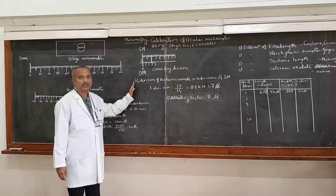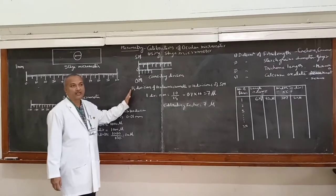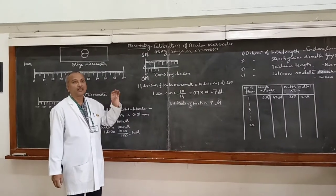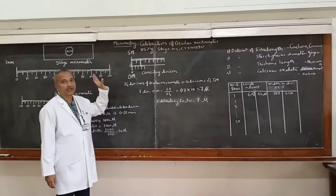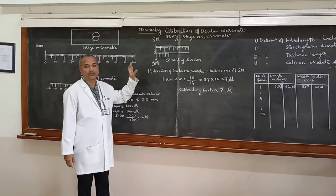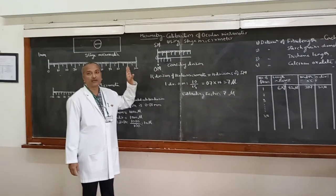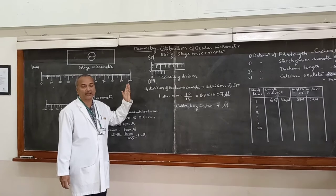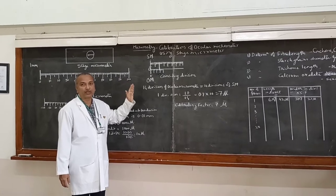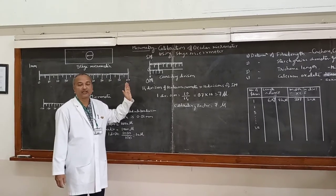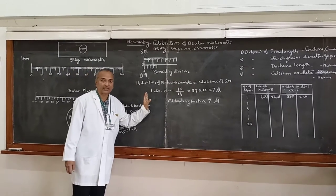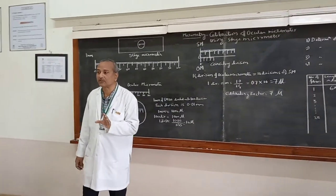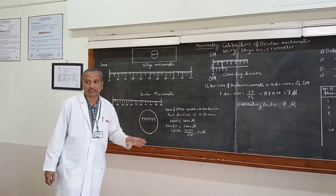Once calibration is completed for both high power and low power objectives, you can proceed to experimentation. Note that if the ocular micrometer is used with a different microscope, it must be recalibrated. However, if the same ocular micrometer is calibrated on the same microscope, the existing calibration values can be reused.